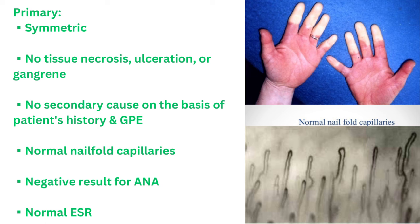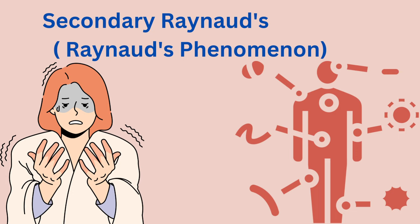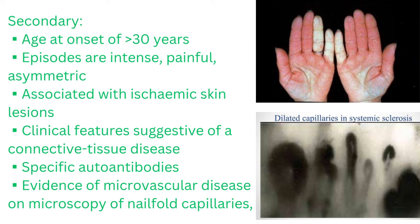Secondary Raynaud's, often termed Raynaud's phenomenon, is associated with underlying conditions, most commonly autoimmune diseases. It sets in after the age of 30, with episodes that are often intense, painful, and may exhibit asymmetry, and can be accompanied by ischemic skin lesions. The clinical picture might suggest a connective tissue disease, with features such as arthritis and abnormal lung function, and autoantibodies specific to autoimmune diseases might be present. Microscopy of nailfold capillaries reveals evidence of microvascular disease.